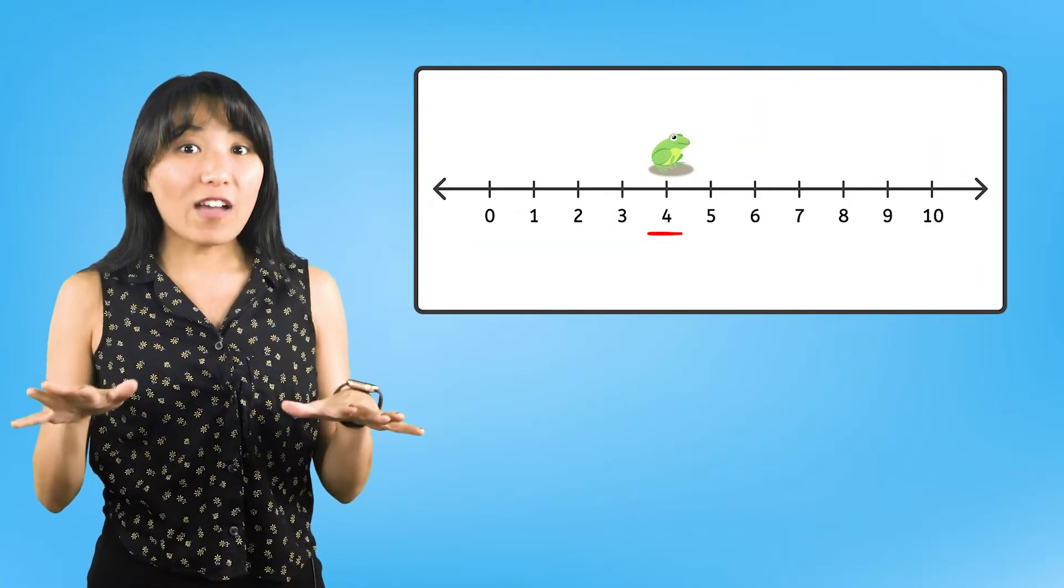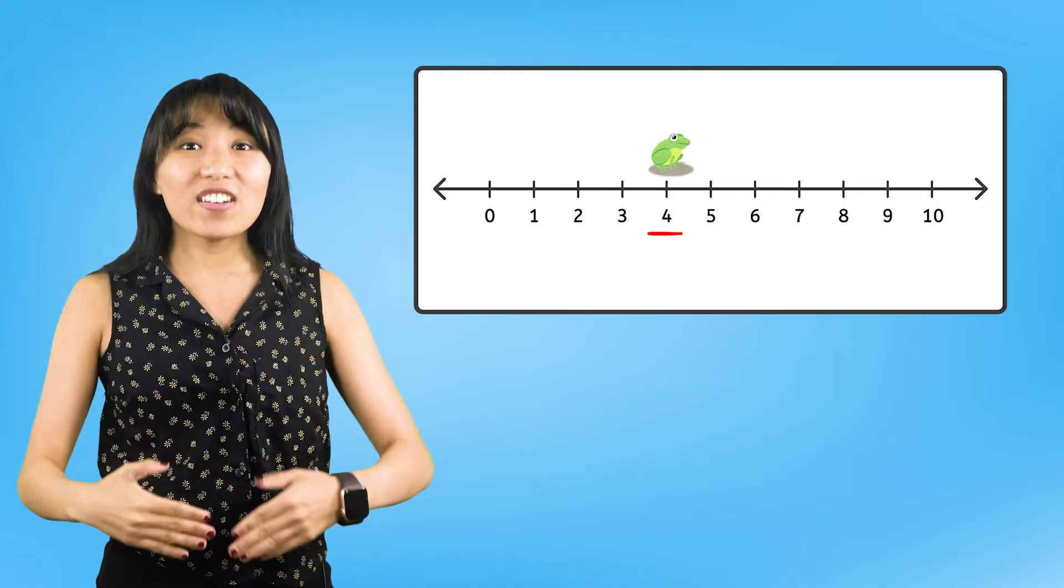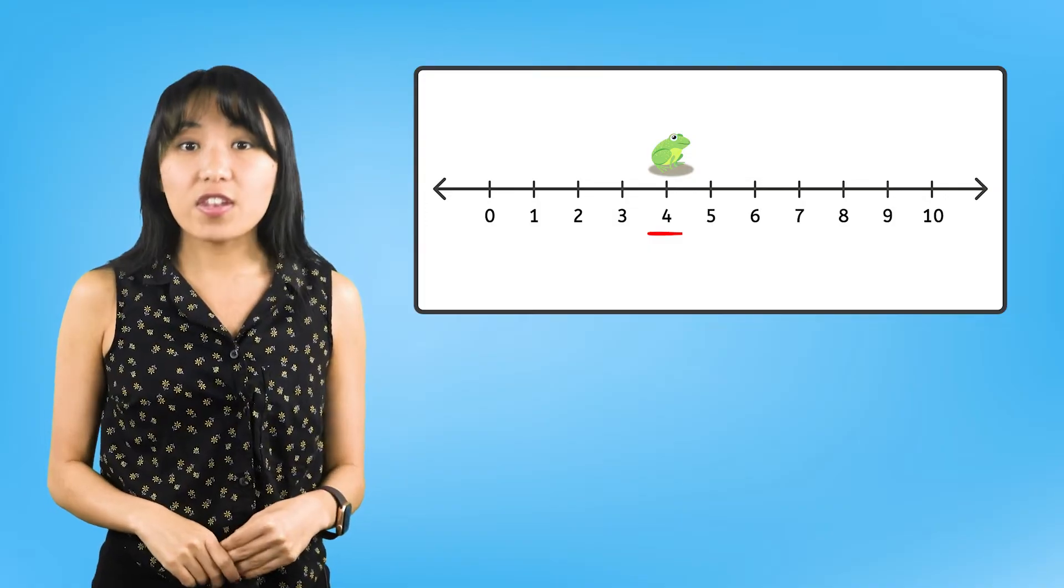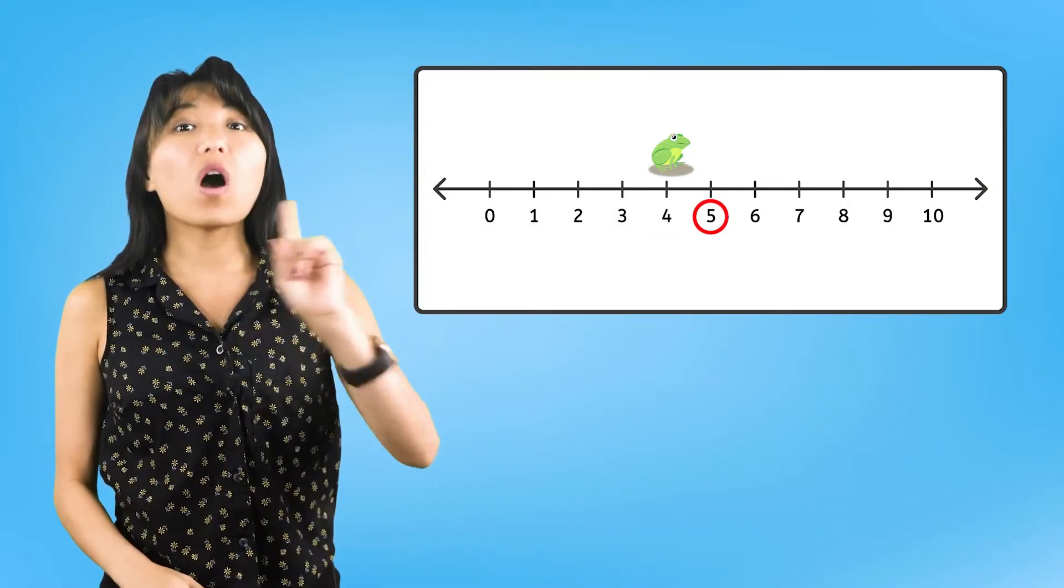So, with every Forward Frog hop on the number line, the numbers get bigger by one. That means the number that comes after a number is one more.